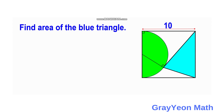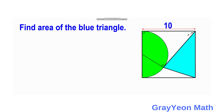First, we need to draw a line from the corner of the square to the center of the semicircle. Since the diameter of the semicircle is equal to the side of the square, this is 10. If the diameter is 10, then the radius is 5.